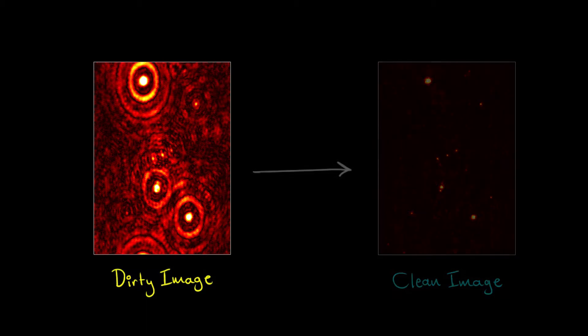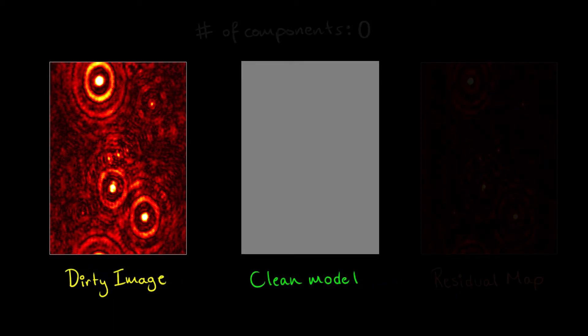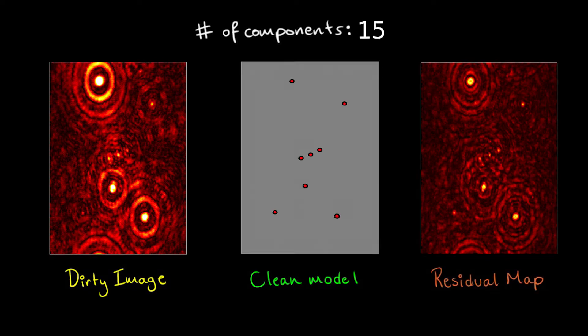This algorithm iteratively builds a model of the true sky brightness distribution by assigning clean components to the brightest emission, subtracting each component convolved by the point spread function from the image, and repeating that process.